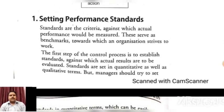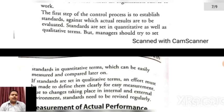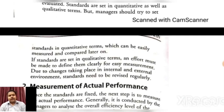The first step of controlling process is setting performance standards. Standards are the criteria against which actual performance would be measured. These serve as benchmarks towards which an organization strives to work. The first step of the control process is to establish standards against which actual results are to be evaluated. Standards are set in quantitative as well as qualitative terms, but managers should try to set standards in quantitative terms which can be easily measured and compared. If standards are set in qualitative terms, efforts must be made to define them clearly for easy measurement. Due to changes in the internal and external environment, standards need to be revised regularly.